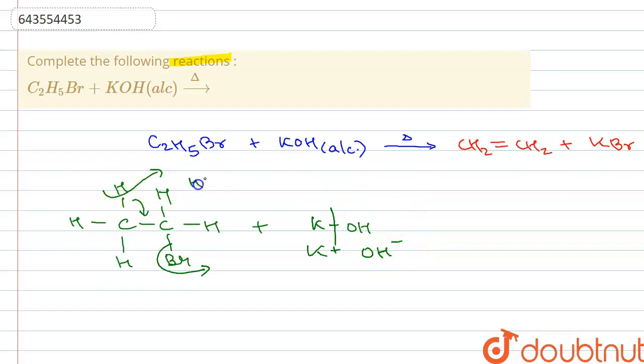So OH- ion is attached with H+ ion which is removed here and they form water. Along with it, bromine which forms Br- ion when it gets removed attaches with K+ to produce KBr. So these two substances get removed from the reaction, and because hydrogen has donated its electron pair to a carbon-carbon bond, there is a formation of a double bond between the two carbon atoms.